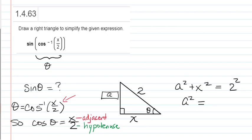So that means that A squared is equal to 2 squared minus x squared, or 4 minus x squared. And that means that A must be plus or minus the square root of 4 minus x squared.